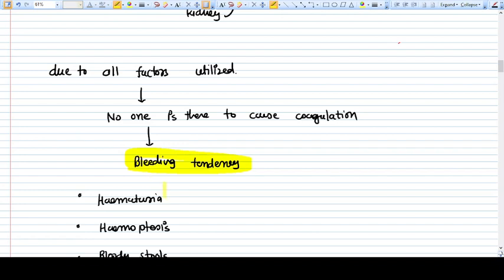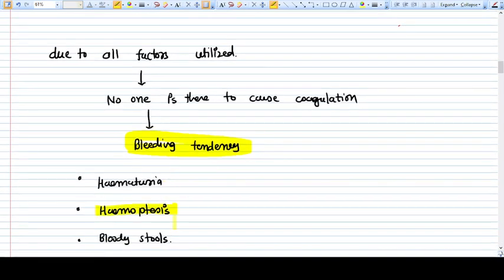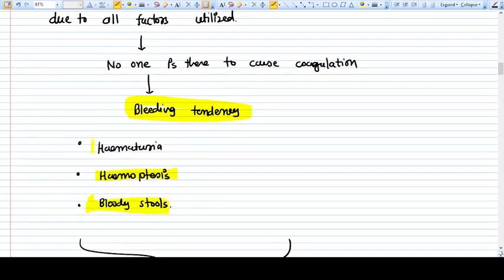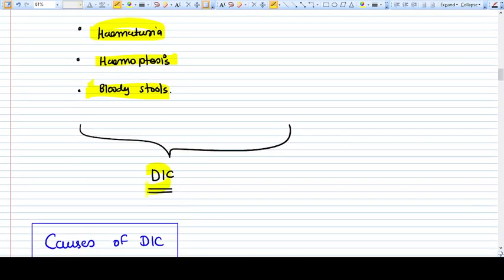You see, one process has disrupted the other one. You will get bleeding all the way - hematuria, hemoptysis, bloody stools, everywhere. It starts with extremely high coagulation and then comes anticoagulation. All these problems are called DIC - disseminated intravascular coagulation.